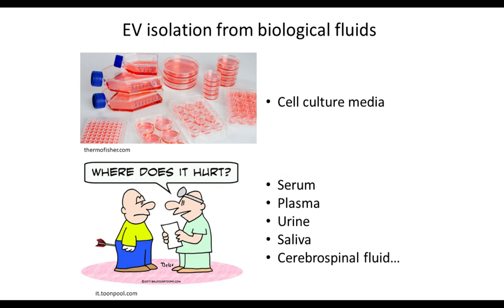Extracellular vesicles can be isolated from many different biological fluids. These fluids are complex biological matrices composed of a plethora of other nano-sized biomaterials that can overlap in size and density with extracellular vesicles. We must be careful during EV isolation to not concentrate other nanoscale molecules that may act as contaminants in the final formulation. Contaminants can change the overall physicochemical properties and may affect the final biological activity by emphasizing or hiding EV function and causing misleading results.